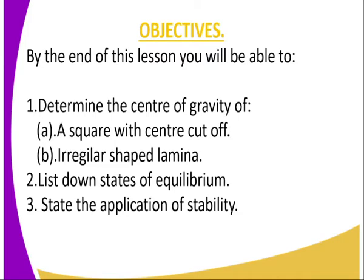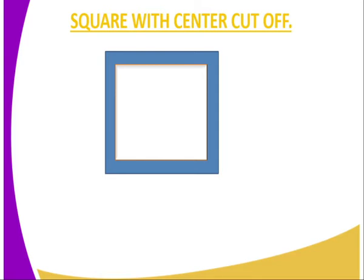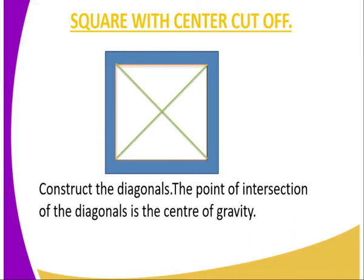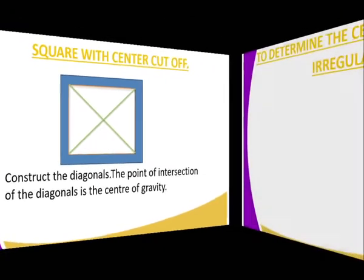A square with a cut at its center — how do we get the center of gravity? Remember that this is still a regular shaped object. The point is that there is nothing at the center; it's just an empty space. So the center of gravity is within its center. We get its center by constructing the diagonals. Once you construct the diagonals, the point of intersection of the diagonals becomes the center of gravity.